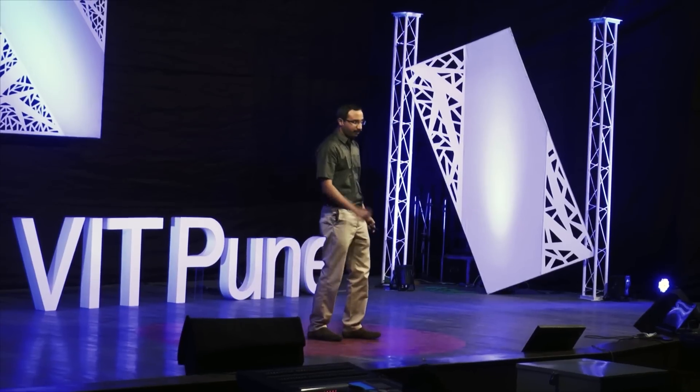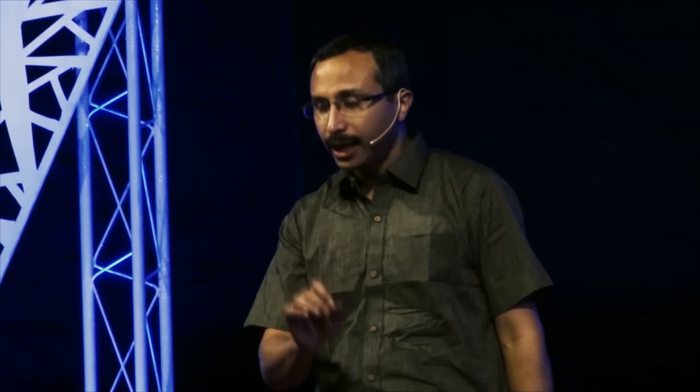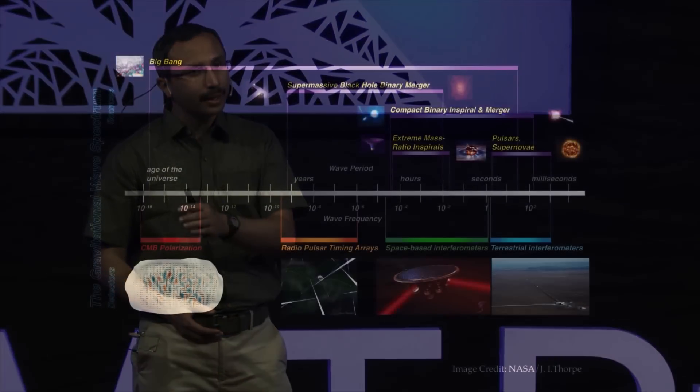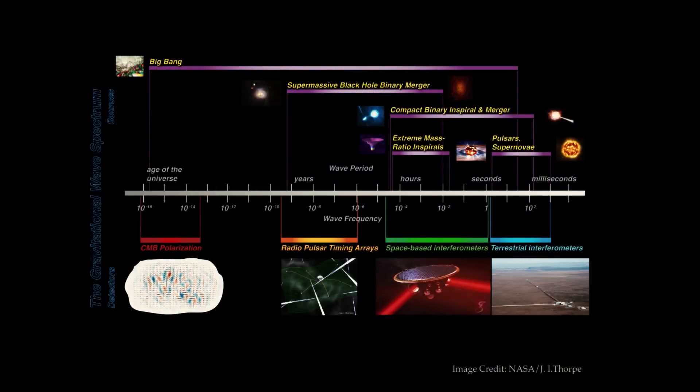With LIGO and ground-based detectors, we will be seeing only a small part of the whole gravitational wave spectrum — much like how we see only a small part of the electromagnetic spectrum. Gravitational waves exist at every frequency. LIGO covers roughly the audible range, around 10 hertz to maybe a kilohertz. But if we go to space, we can access lower frequencies, which will be very useful for seeing supermassive black holes. We may even be able to detect radiation coming right after the Big Bang.